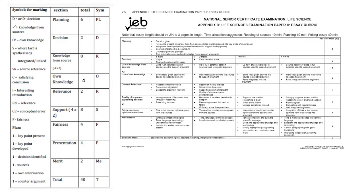To your right is the official IEB Life Sciences Paper 2 essay rubric, and to your left is what markers usually use. Markers use symbols such as PL for planning, D for decision, K for knowledge from source, and so on. The most important thing to note is that the essay is 40 marks of Paper 2.